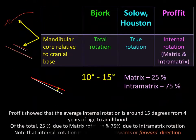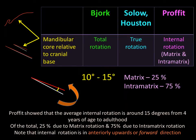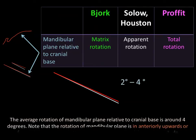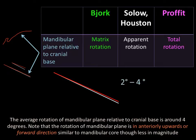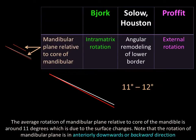Prophet showed that the average internal rotation is around 15 degrees from four years of age to adulthood. Of the total, 25% is due to matrix rotation and 75% due to intramatrix rotation. Note that the internal rotation is in an anteriorly upwards or forward direction. The average rotation of the mandibular plane related to the cranial base is around 4 degrees from four years of age to adulthood, also in a forward direction though less in magnitude. The average rotation of the mandibular plane relative to the core of the mandible is around 11 degrees, which is due to surface changes, and is in an anteriorly downwards or backward direction.